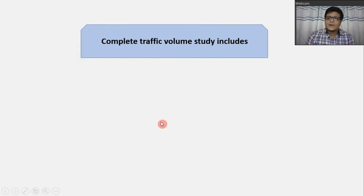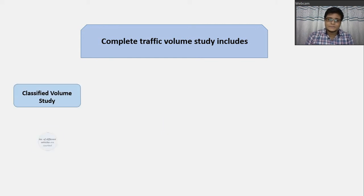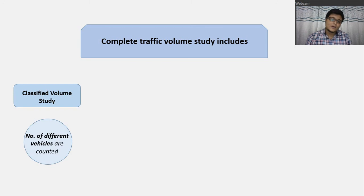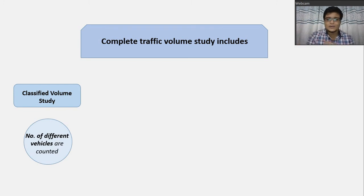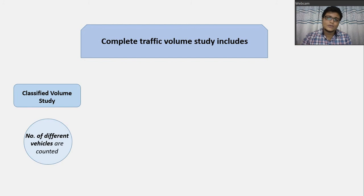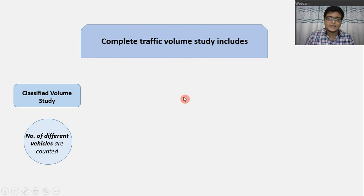A complete traffic volume study includes a classified volume study, where a number of different vehicle types are counted. As seen in the video, various vehicles are counted — the number of autos, number of two-wheelers, and number of four-wheelers passing through. In this classified volume study, we will have specific numbers for each category of vehicles.